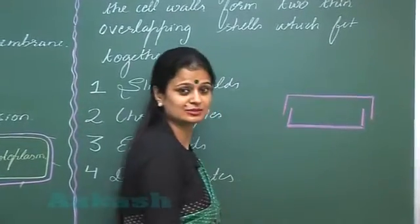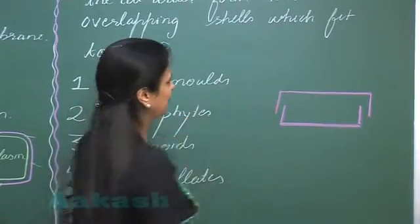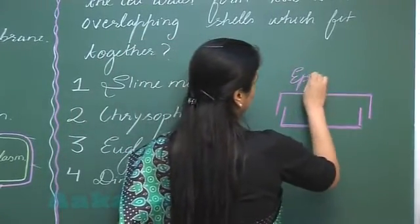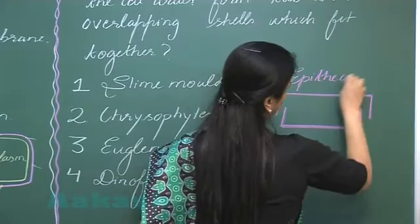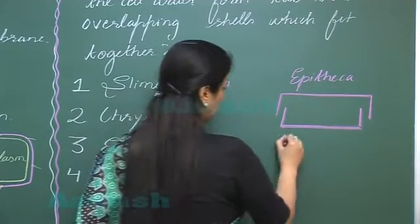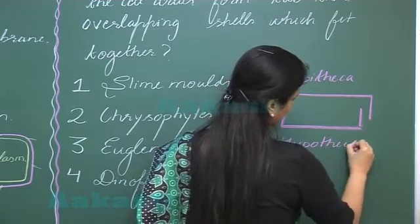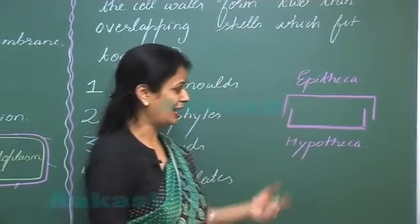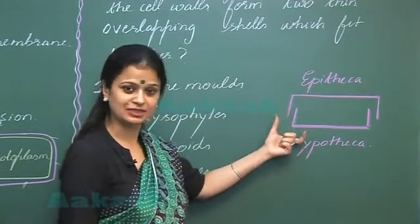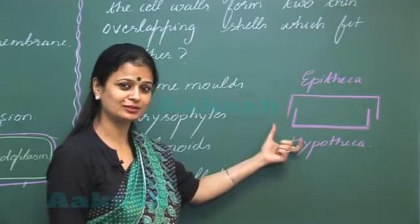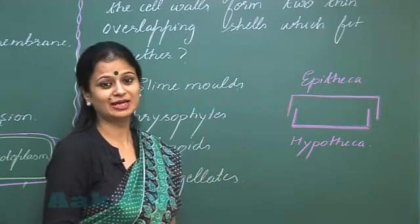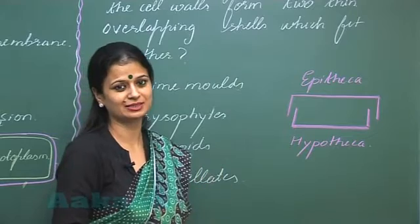...halves like this. The upper half of the cell wall is known as epitheca, the lower one is hypotheca. They are fitted together in such a way that gives a soap box-like appearance.